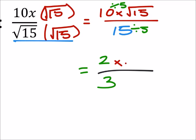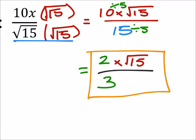So 2x times the square root of 15, all over 3. Yeah, now we don't have that irrational, radical denominator.